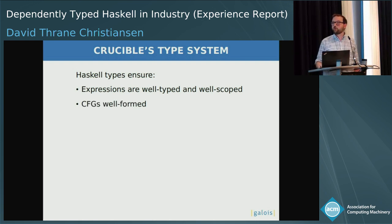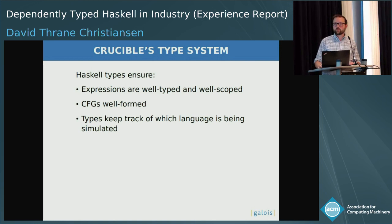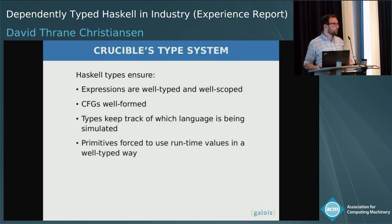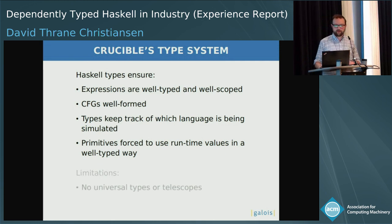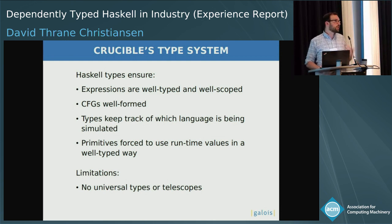We use it to ensure that our control flow graphs are well-formed — we're not jumping to non-existent places. We're keeping track of which language is being simulated so that you don't use your x86 primitives in your JVM simulator. And also, when you implement these primitives, the runtime values also track their types, so you can't try to add two closures together. We've managed to encode most of what we want, with a couple of exceptions — we don't quite have representation of universal types, and we don't yet have representation of telescopes that works the way we want.